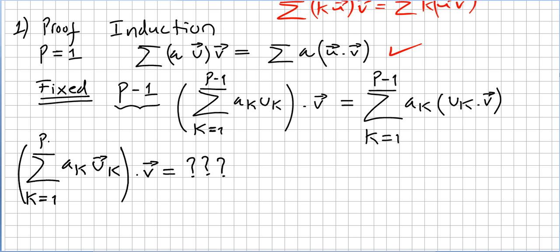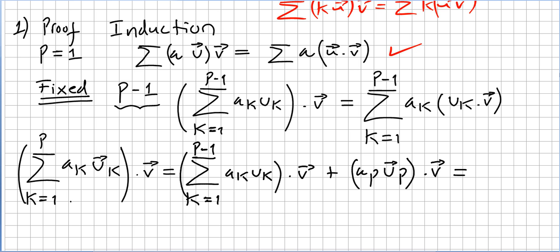So, is the sum from k equals 1 to p of ak·uk, all times the fixed vector v, true for p? Remember the summation notation — we move one back. So this will be the sum from k equals 1 to p minus 1 of ak·uk, times v, plus the missing term: ap·up times v.